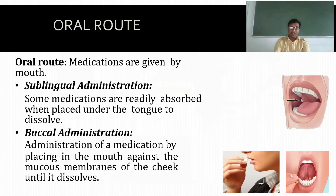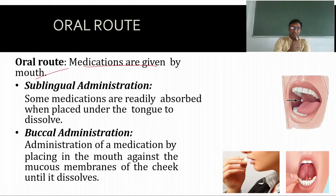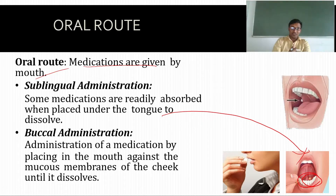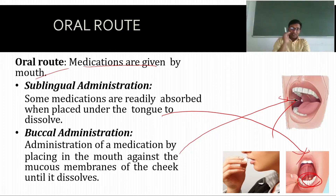Now we'll see each route one by one. Coming to the oral route, medicines are given through the mouth. First is sublingual administration — the patient keeps the medicine under the tongue. Next is buccal administration — the medicine is kept in the cheek. Coming to oral administration, the medicine is taken directly into the mouth and swallowed.